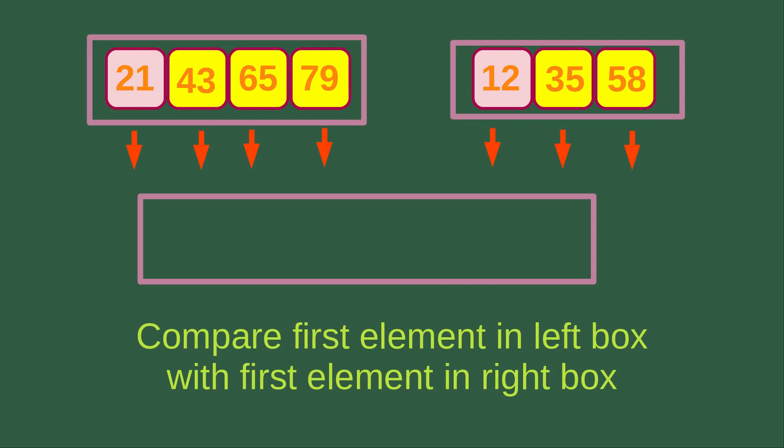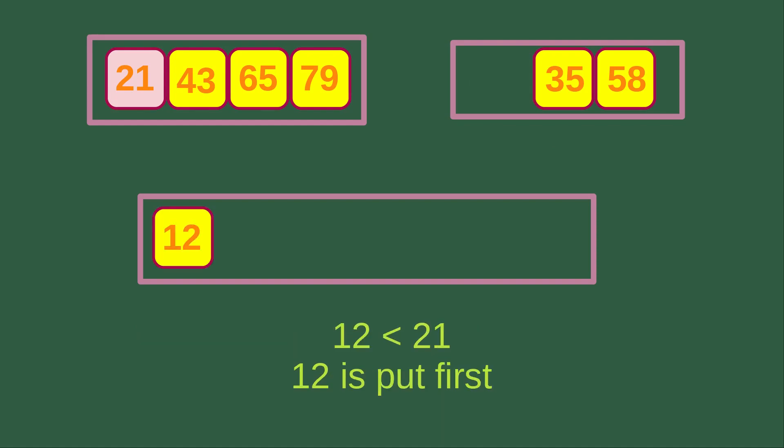We repeat the comparison process. We compare the first element in the left box, which is 21, with the first element in the right box, which is 12. We know that 12 is smaller than 21, so we put 12 into the larger merging box first.